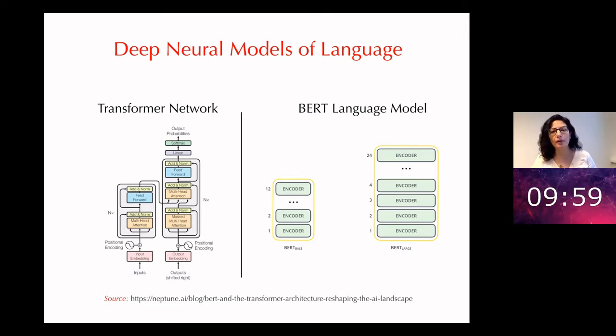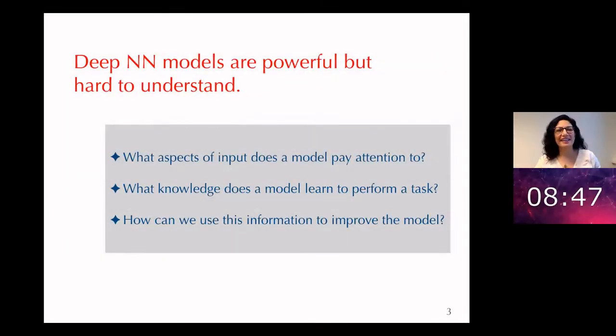But with this power comes a cost. Deep neural network models are very powerful, but they're very hard to understand. Because of their complex architecture and because of the very many parameters that they have, we can't easily understand the inner dynamics of these models. This poses a challenge for both people who want to use these in applications, as well as the researchers who want to understand how these models work.